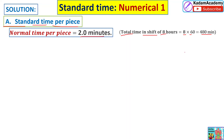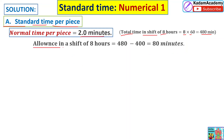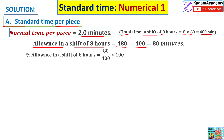Now we calculate the allowance in the shift. Out of 480 minutes per shift, workers are working 400 minutes. The remaining 80 minutes is the allowance for personal use. Since the allowance is given in minutes and not percentage, we calculate: 80 upon 400, multiplied by 100, giving us 20 percent allowance.